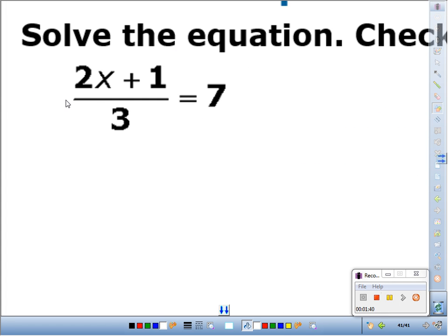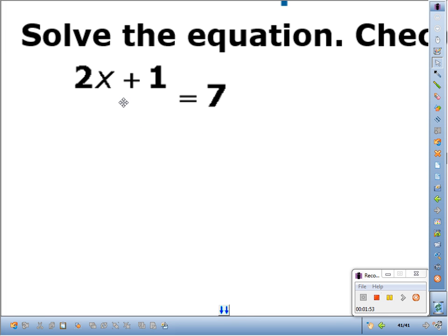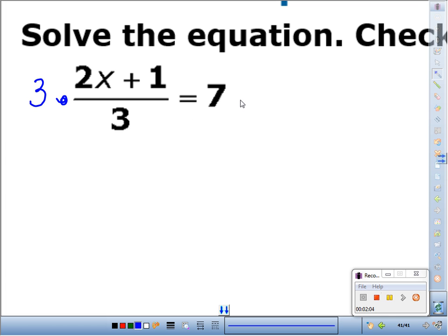Yesterday, we solved equations that looked like this. 2x plus 1 equals 7. What do you do to solve this one? Subtract 1, subtract 1, right? However, we have something in the way. That. We need to get rid of that first before we continue. So what is the 3 doing? What is the inverse? Multiply times 3. Multiply times 3. We end up with 2x plus 1 equals 21. Do you know what to do from there? Finish it off, please.